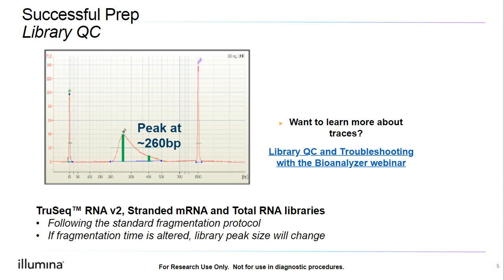We also want to look out for any peaks outside our main library peak, as these can affect sequencing. I will not be going into the details of traces and library QC, as these are covered in our library QC and troubleshooting with the Bioanalyzer webinar on October 21. I have provided a link to that webinar on this slide. If you have any specific questions about your library trace, you can always email us or call us at Illumina Tech Support, and we would be happy to take a look.